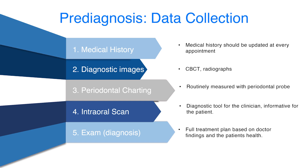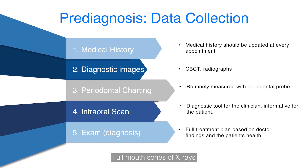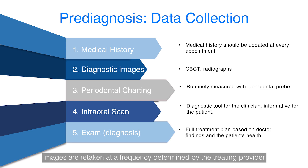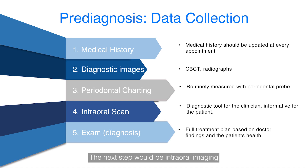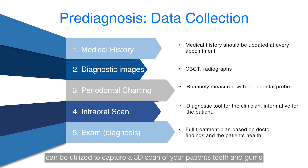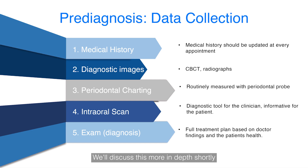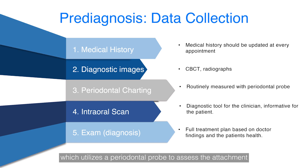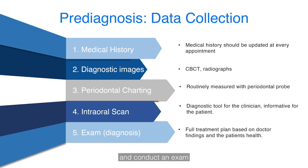Once obtaining a full medical history, intraoral radiographs are exposed. There are several types: panoramic x-rays, full mouth series of x-rays, CBCT imaging, bite-wing x-rays, and occlusal radiographs if needed. Images are retaken at a frequency determined by the treating provider. The next step would be intraoral imaging. The AeroScan3 and the included dental launcher software can be utilized to capture a 3D scan of your patient's teeth and gums. The final step for patient data collection should be assessing gum disease in a process called periodontal charting, which utilizes a periodontal probe to assess the attachment in the oral cavity. The doctor will eventually compose all of this information and conduct an exam to go over the full treatment needs of the patient and render the best options available.